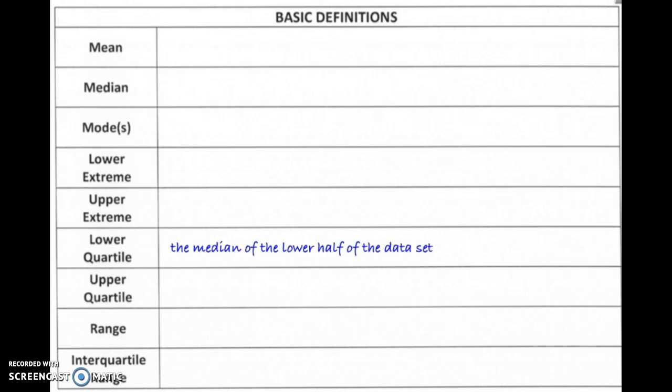The lower quartile is a little bit more complicated. To find the lower quartile, you take the median of the lower half of the data set. And to find the upper quartile, you take the median of the upper half of the data set.